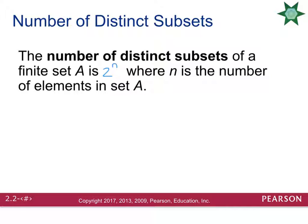On occasion, you will be asked how many subsets a set can have. They call them distinct subsets because they want different elements. The order of subsets doesn't really matter — it's the elements that count. To find the number, count how many items are in the set, represented by lowercase n, and take 2 raised to the n. Two raised to the number of items in the set tells you how many distinct subsets you can have.